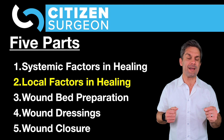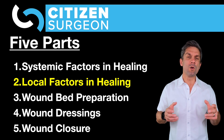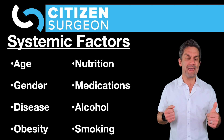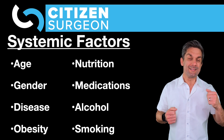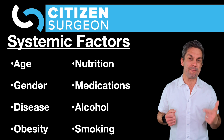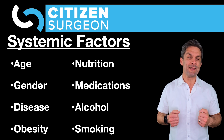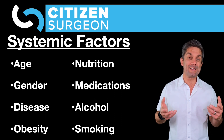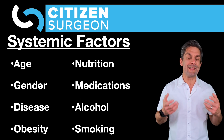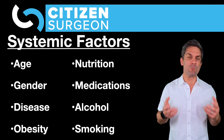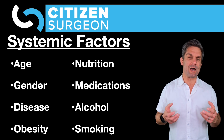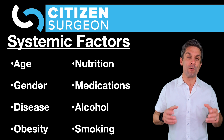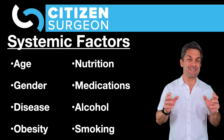Today we're jumping to the local factors. Quick review: what were the systemic factors with wound healing? We talked about age, gender, different diseases like cardiovascular diseases and diabetes, obesity, nutrition, protein deficiency, vitamins A, C, and E, and finally smoking and alcohol — how these impede wound healing by limiting angiogenesis, collagen production in the proliferative phase, and remodeling. Definitely check that video out.